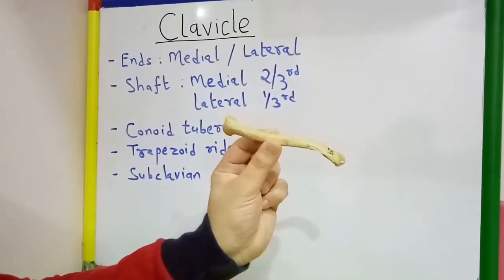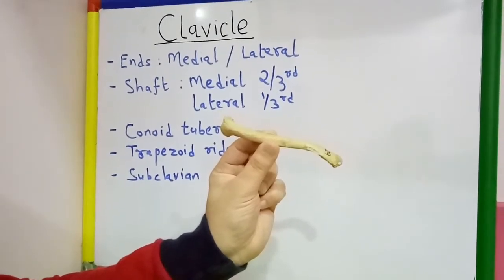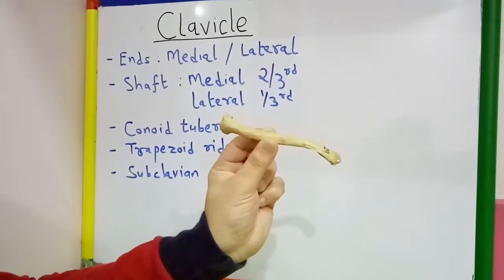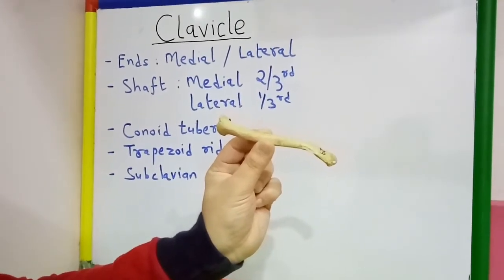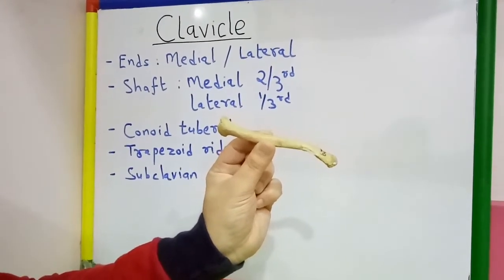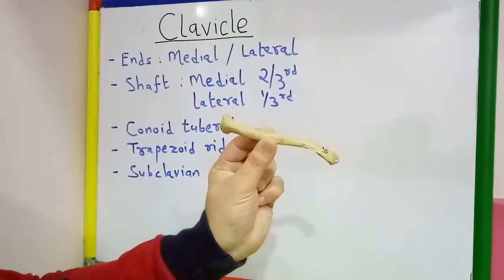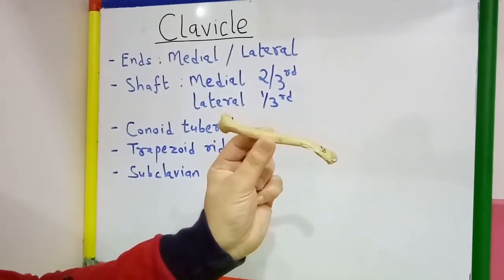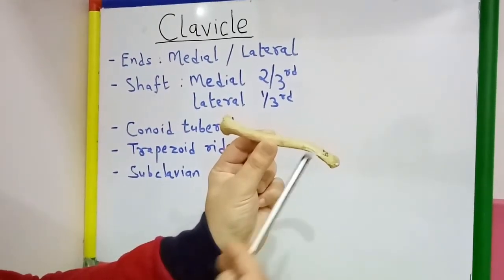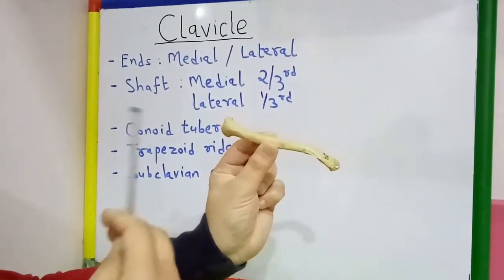It supports the shoulder so that the arm can swing freely away from the trunk, and it also helps in the transmission of weight from the upper limb to the sternum.